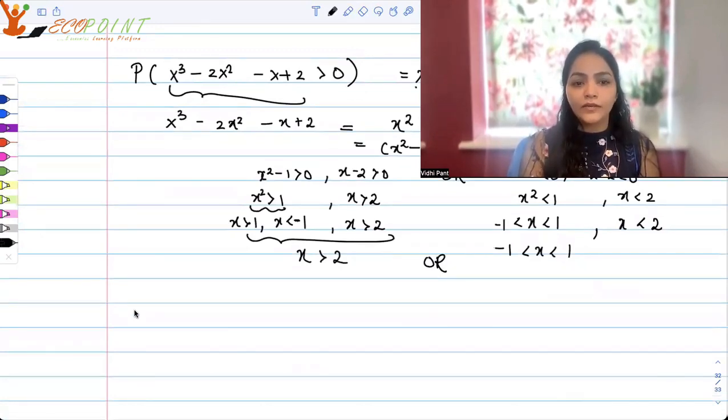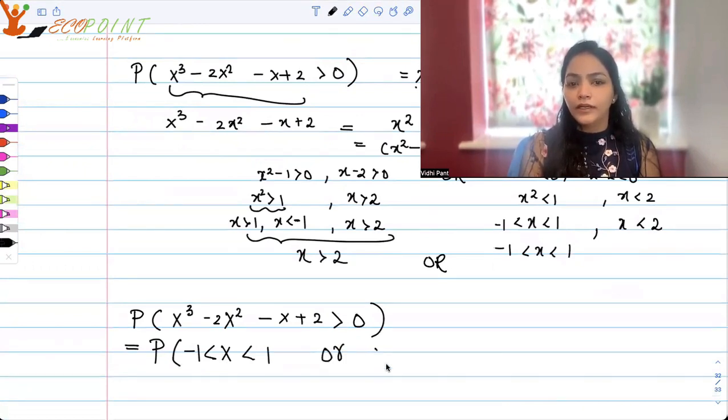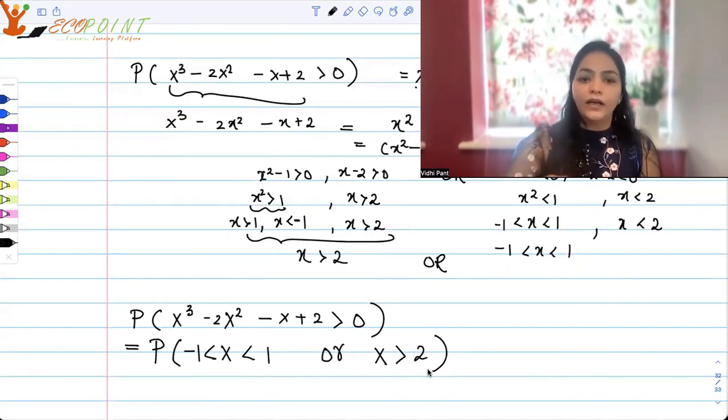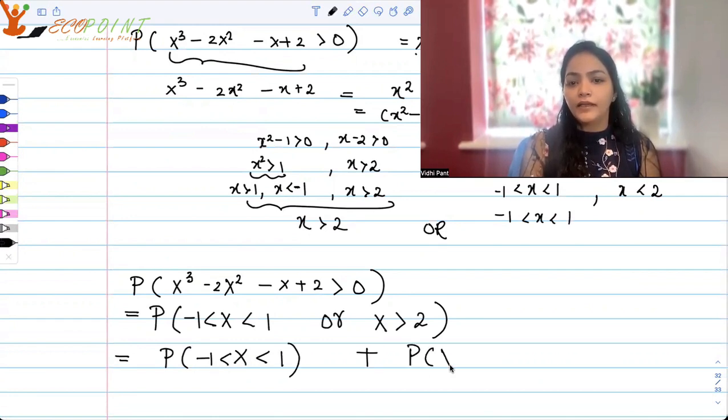So what is happening is probability X³ - 2X² - X + 2 > 0 is same as saying either X is between -1 and 1, or X is greater than 2. Either this is happening or this is happening. That means it will be the sum of the probability that X is between -1 and 1 and X is greater than 2.